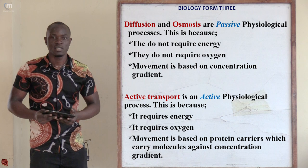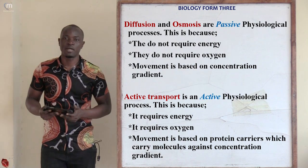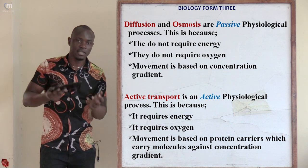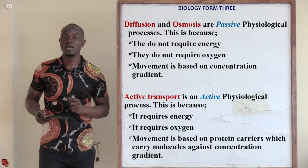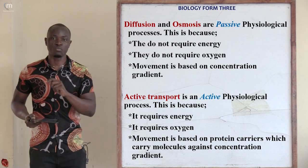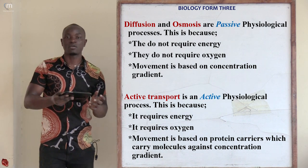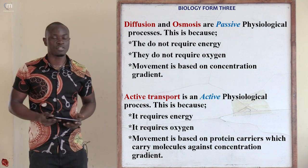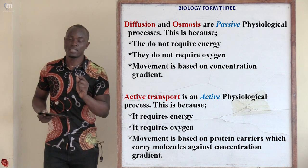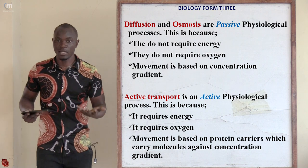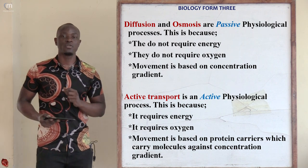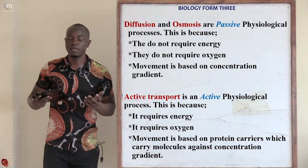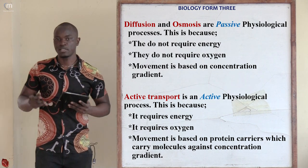Similarly with osmosis: if water molecules want to move from low to high concentration, active transport may step in and force molecules to move against their concentration gradient, from high to low concentration. That's why active transport must always use energy, and for this energy to be produced, oxygen must be present to oxidize and break down food.